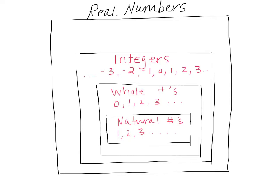The next set is what we call the rational numbers. Rational numbers are what you have learned to think of as fractions, where you have a numerator and a denominator, such as 1 half or 2 thirds, or even numbers that can be expressed as decimals, for instance 0.5 or negative 0.5. Integers do not include any numbers between 1 and 0, or between 1 and 2, or between 2 and 3. They are just those whole numbers and their opposites.